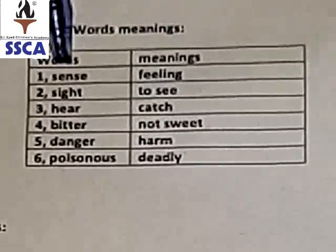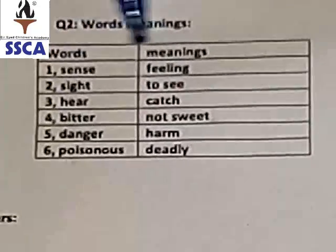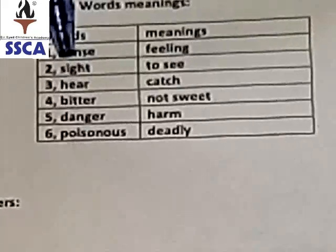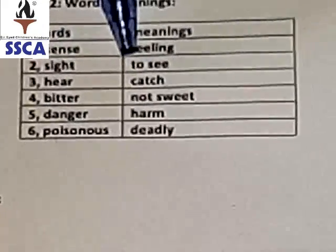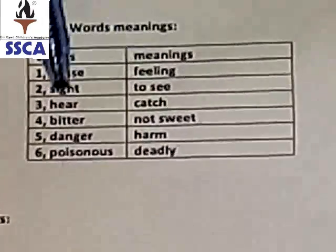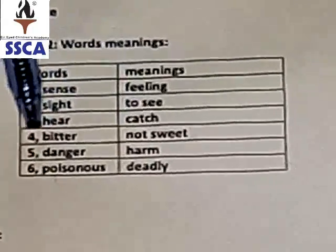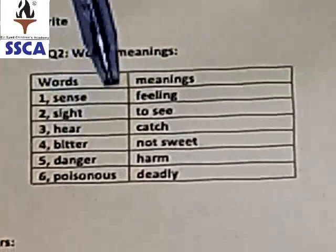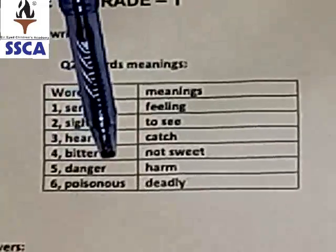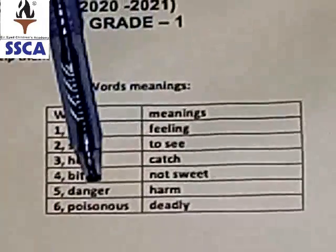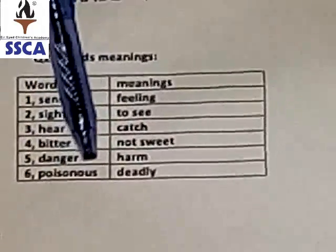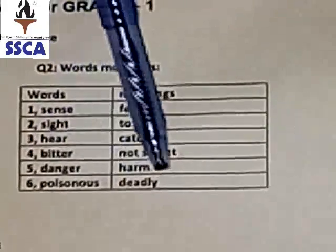The first word is Sense; the meaning of Sense is Feeling. The second word is Sight; the meaning of Sight is To See. The third word is Hear; the meaning of Hear is Catch. The fourth word is Bitter; the meaning of Bitter is Not Sweet. The fifth word is Danger; the meaning of Danger is Harm. The sixth word is Poisonous; the meaning of Poisonous is Deadly.